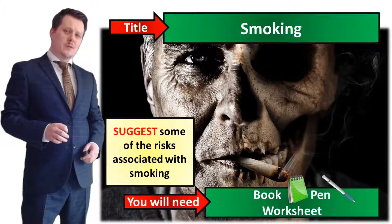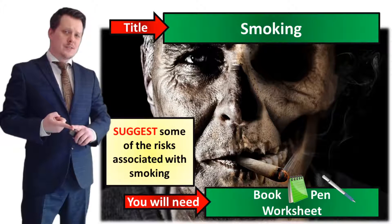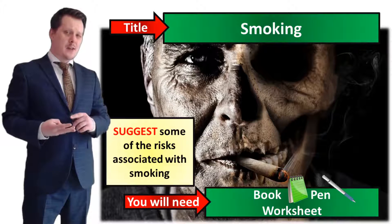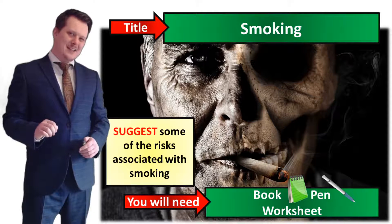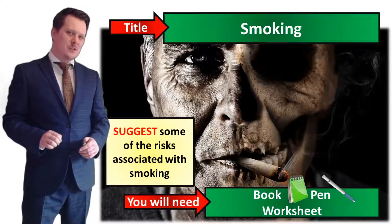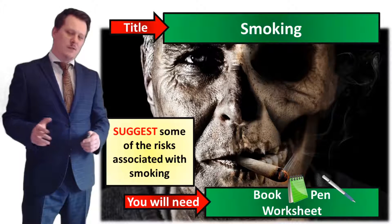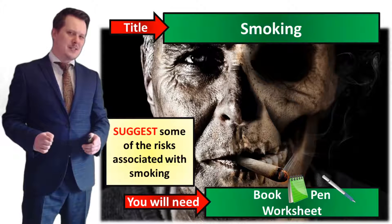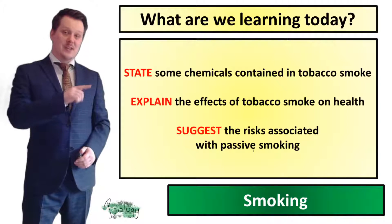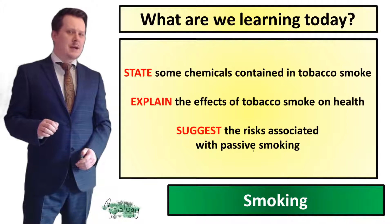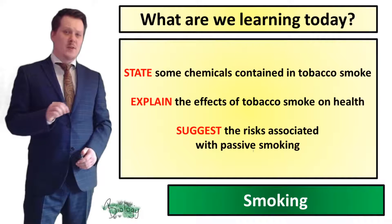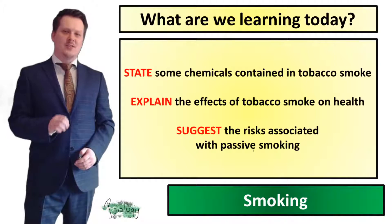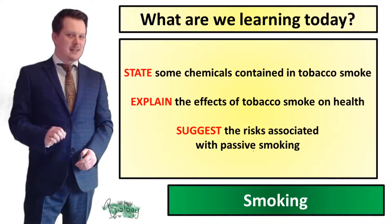The most common associated risks with smoking are lung disease, emphysema, and other types of COPD. In today's lesson we are going to be looking at some of the other associated risks with smoking. We're going to state some of the chemicals contained in tobacco smoke, explain the effects of tobacco smoke on health, and suggest the risks associated with passive smoking.